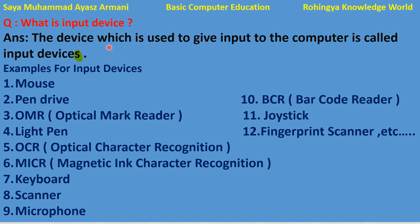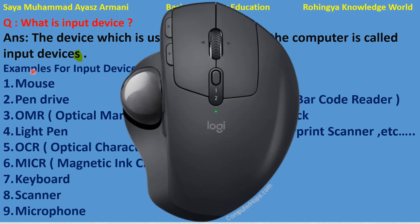Now let us look at some examples of input devices. The first example is the keyboard. The keyboard is an input device. Another example is the mouse. The mouse is also an input device — it is very necessary for a computer.